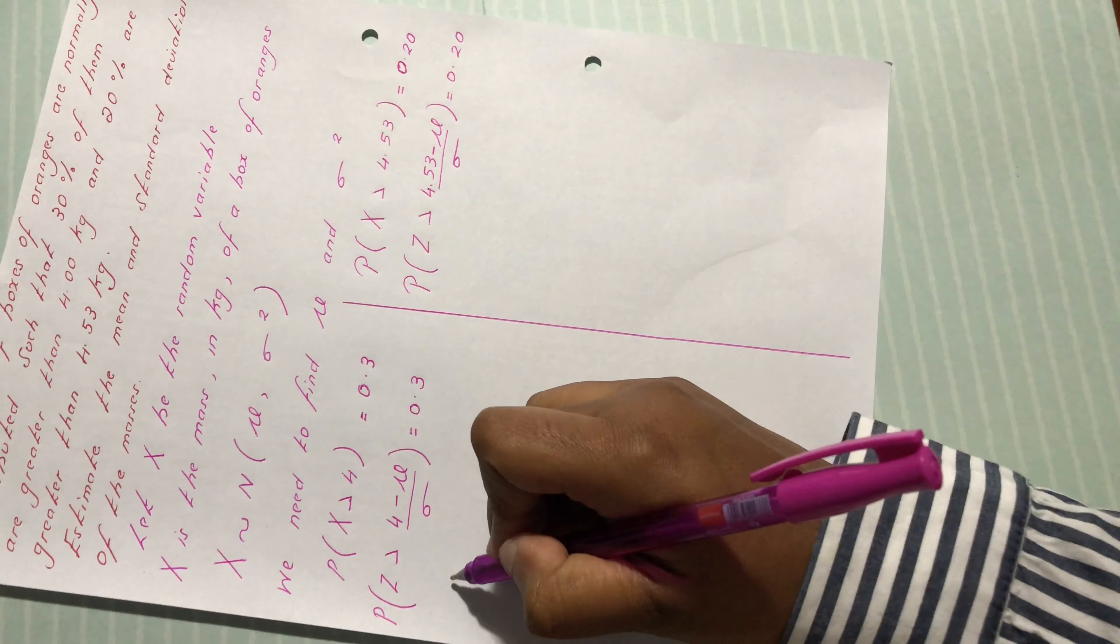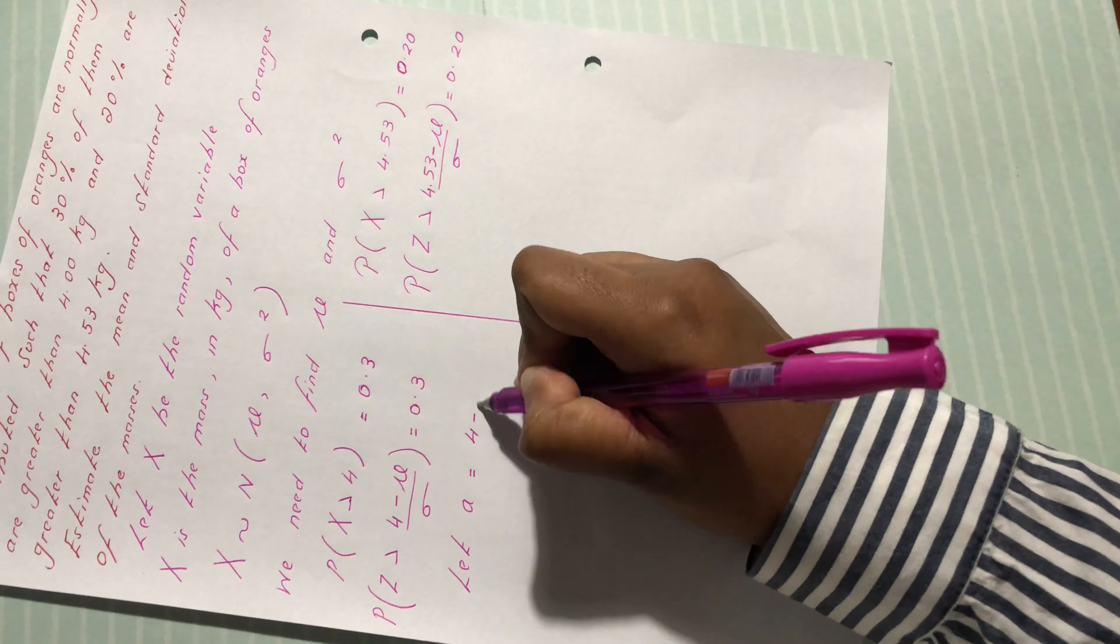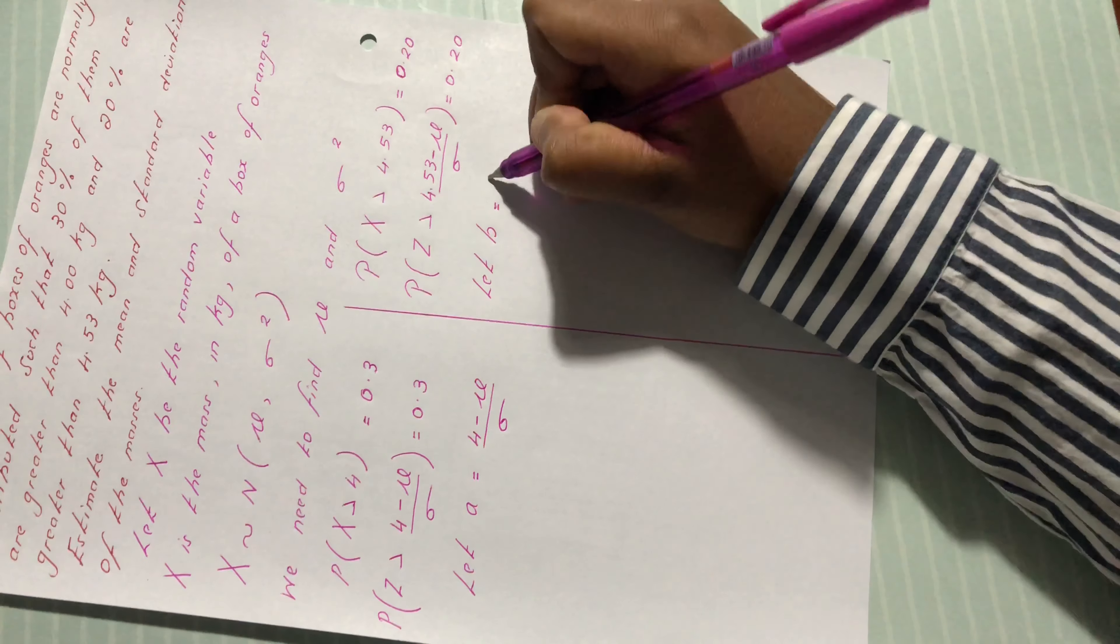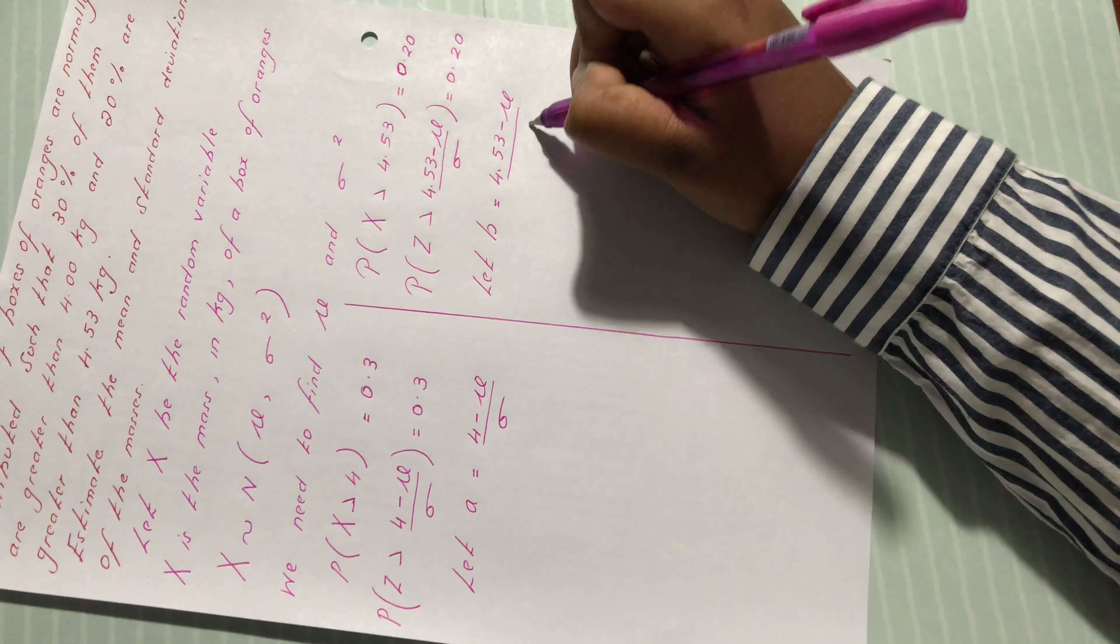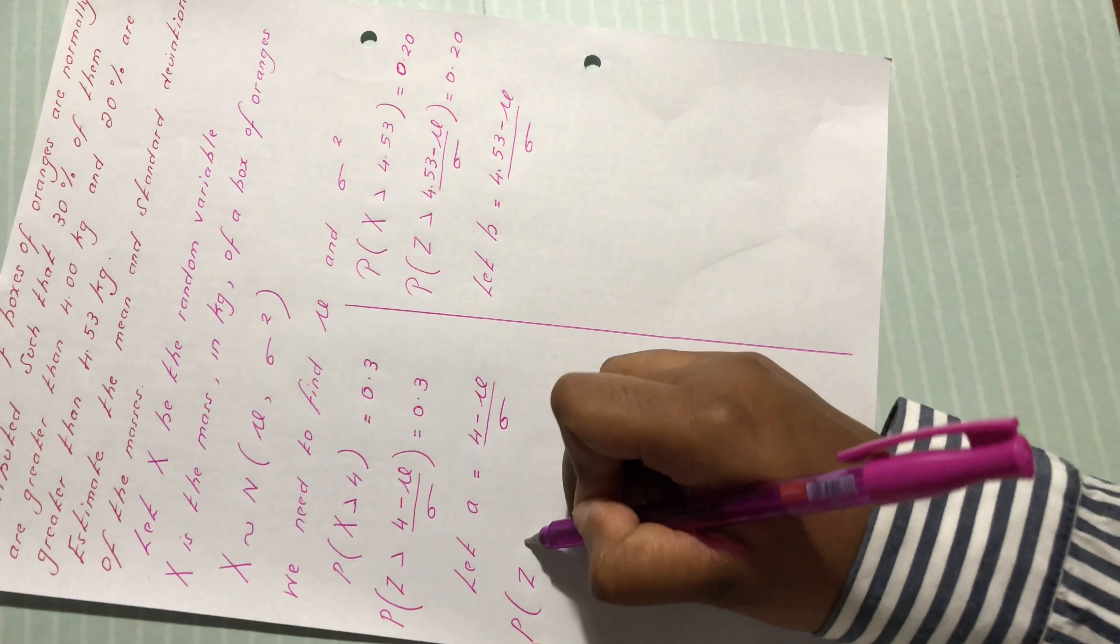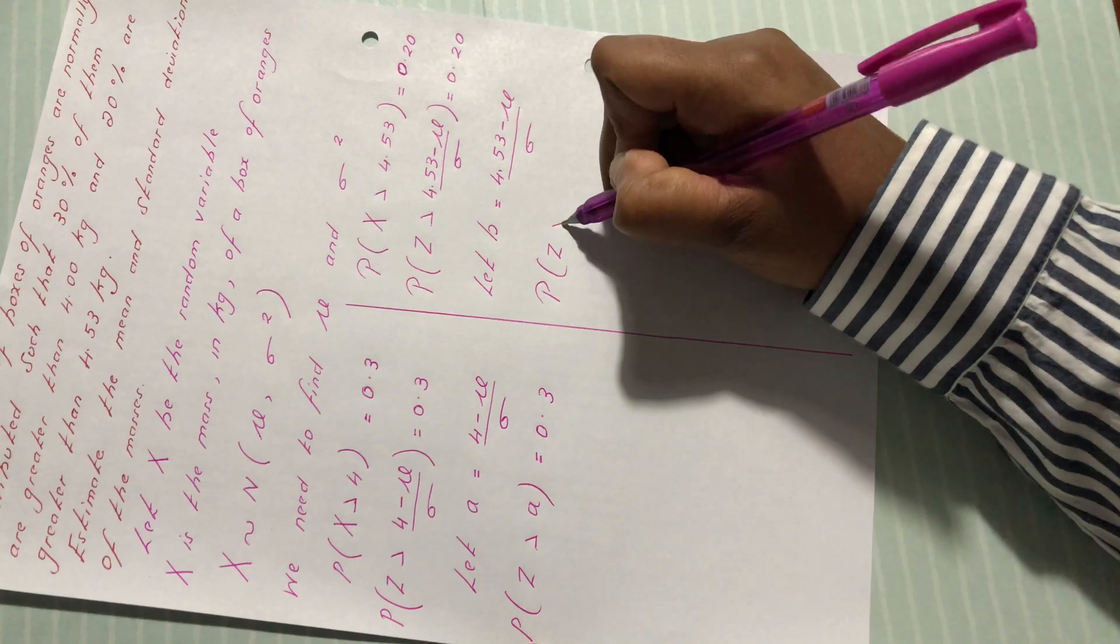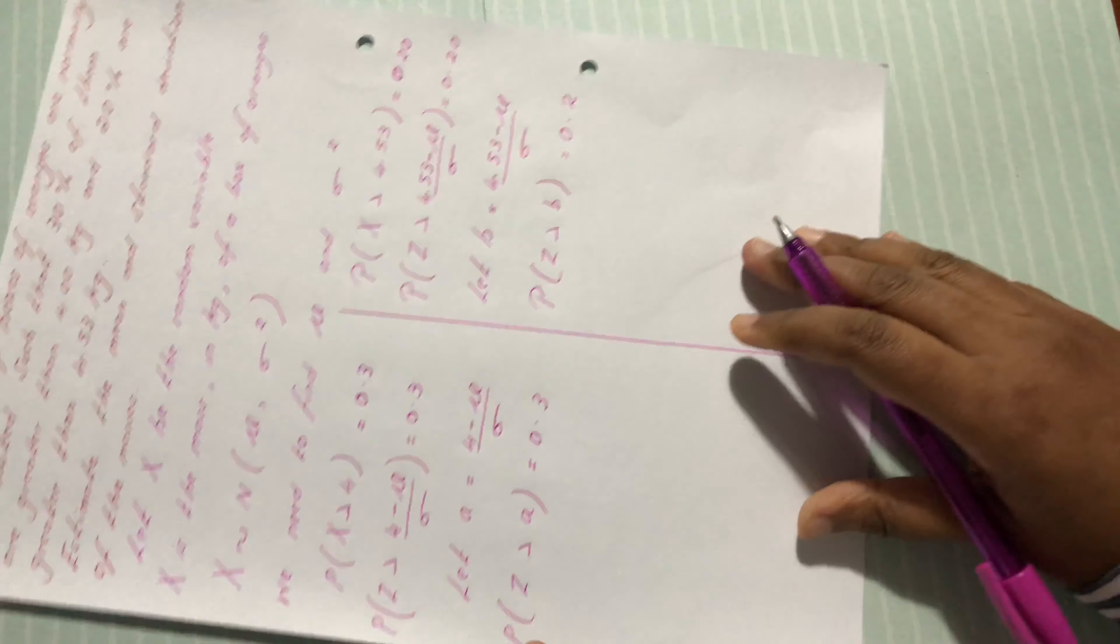Here, we're going to say let a equals 4 minus mu over sigma. And let b equals 4.53 minus mu over sigma. So we have probability of z greater than a equals 0.3, and probability of z greater than b equals 0.2.